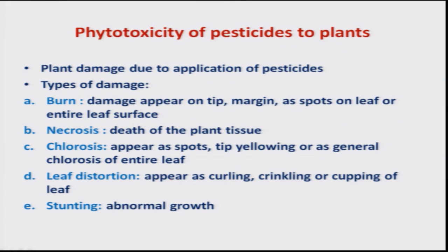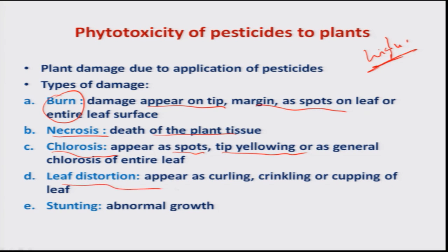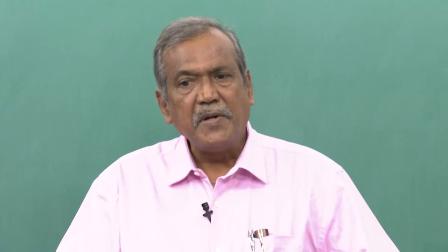Lastly, phytotoxicity of pesticides to plants occurs when higher-than-recommended dosages are used. Typical plant damage symptoms include burning near the tips or margins, leaf spots, necrosis where the whole plant dies, chlorosis appearing as spots or tip yellowing, leaf distortion such as curling, crinkling and cupping, and stunting or abnormal growth. All these lead to poor plant growth, ultimately affecting yield. These considerations are essential before including any insecticide as a component in IPM.